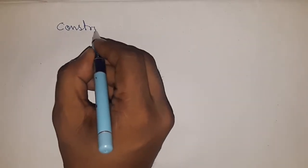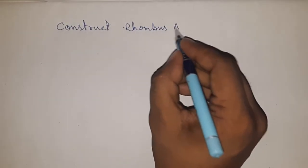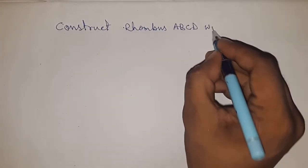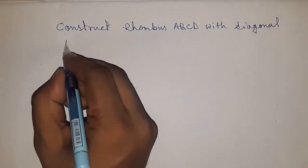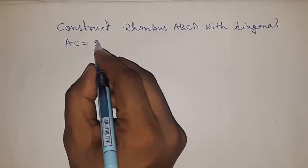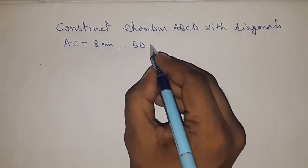Hi everyone, welcome to SSR Classes. Today constructing rhombus ABCD with diagonals AC equal to 8 centimeter and BD equal to 6 centimeter. Before starting the video, I have one request to you: please subscribe channel and press the bell icon for future video notification.